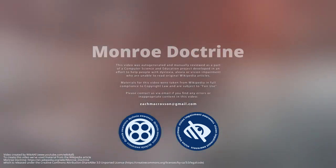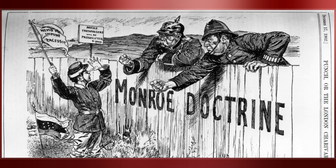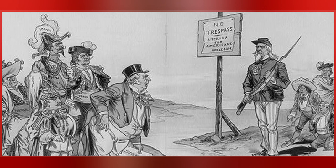The Monroe Doctrine was a United States foreign policy position that opposed European colonialism in the Western Hemisphere. It held that any intervention in the political affairs of the Americas by foreign powers was a potentially hostile act against the U.S. The doctrine was central to U.S. foreign policy for much of the 19th and early 20th centuries.